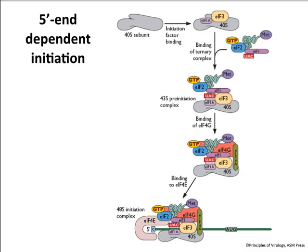The cap binds EIF4E, which in turn binds EIF4G — the C-terminus of 4E binds the N-terminus of EIF4G, bringing in the whole complex. 4G is like a scaffold; it links 4E with the rest of the complex. The 40S subunit is linked to EIF4G through EIF3. The key takeaway is that the cap is what brings the ribosome — the 40S ribosomal subunit — to the mRNA so that it can begin to be translated.